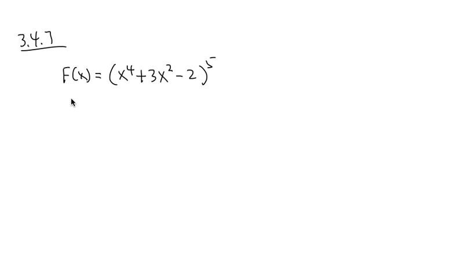3.4 number 7. f of x is equal to parentheses x to the fourth power plus 3x squared minus 2, everything inside here, raised to the fifth power.